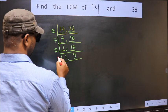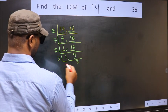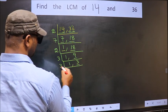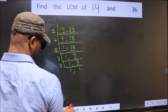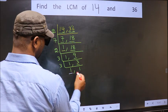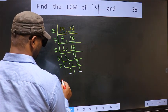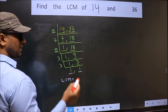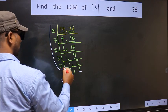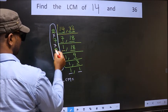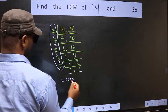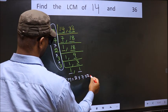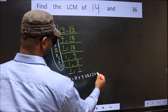Now we have 9. 9 is 3 times 3. Now we have 3 — 3 is a prime number, so 3 times 1 is 3. We got 1 in both places. So our LCM is the product of these numbers: 2 x 7 x 2 x 3 x 3.